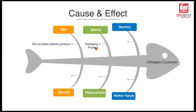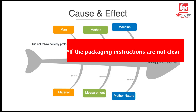Next, method — the packaging process itself. Normally these food delivery apps give very clear guidelines to the restaurants to package food properly. Nobody likes to get a package which is all messed up, but if the packaging process was not followed, then it is a method issue.